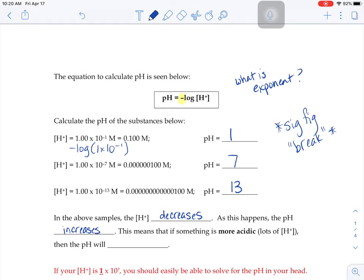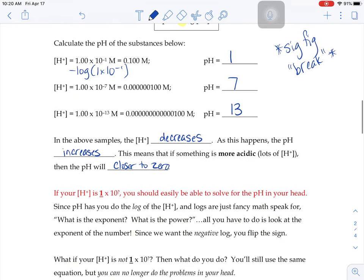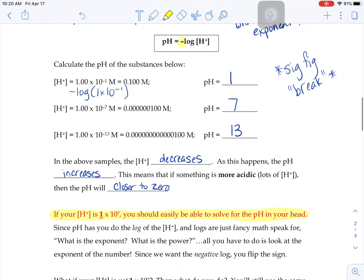What that means is that if something is really acidic, if it has lots of H+, then that means that the pH is going to be closer to zero. pH and H+ are opposites of one another. As one goes down, the other goes up. So if your H+ concentration is 1 times 10 to the something, you should easily be able to solve for that pH in your head. Because all it's asking you to do when you do logs is, what's the exponent? You don't need a calculator to look at those numbers and know that the exponents are 1, 7 and 13.